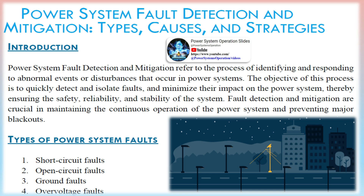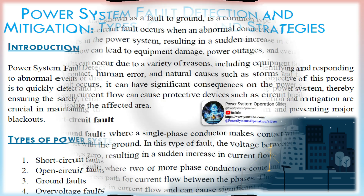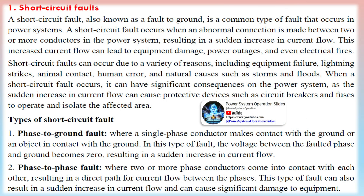Types of power system faults include short-circuit faults, open-circuit faults, ground faults, and over-voltage faults.